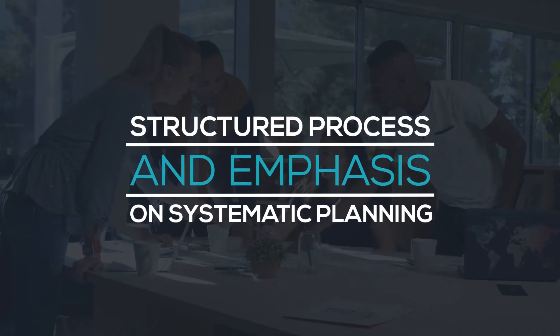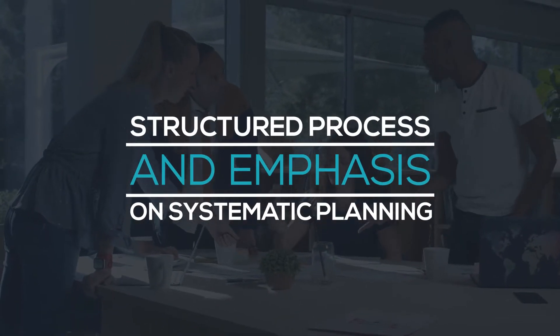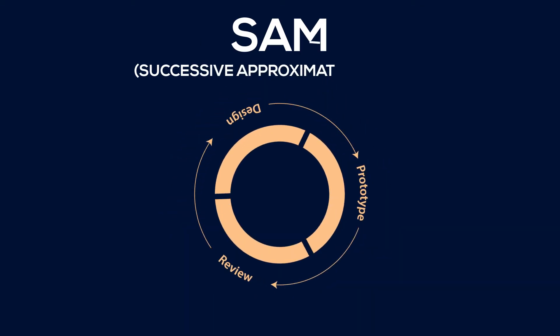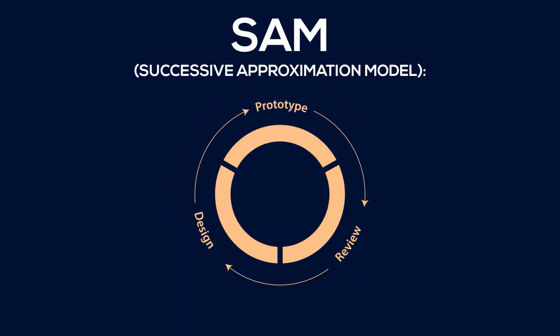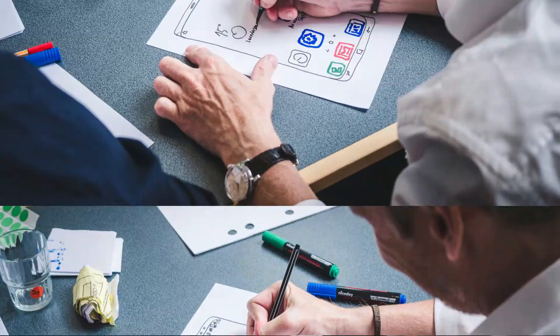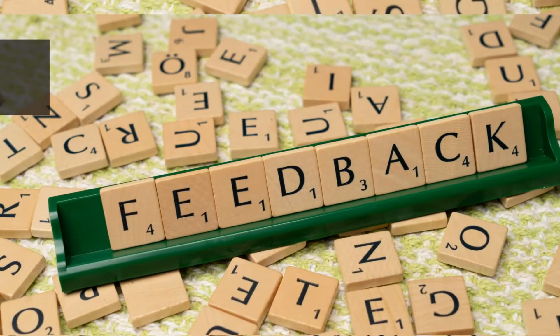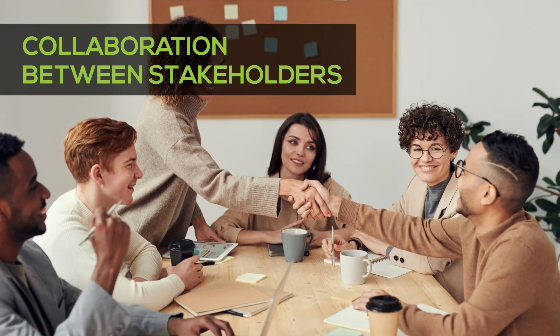It's known for its structured process and emphasis on systematic planning. SAM, or the Successive Approximation Model, takes a more iterative and client-focused approach. It emphasizes rapid prototyping, continuous feedback loops, and collaboration between stakeholders.